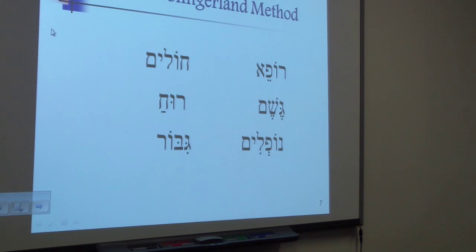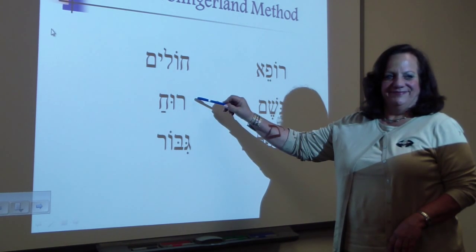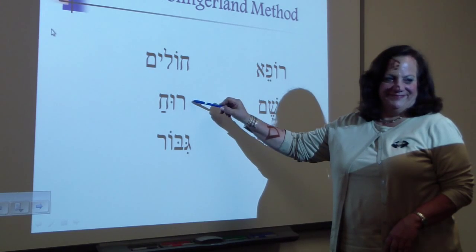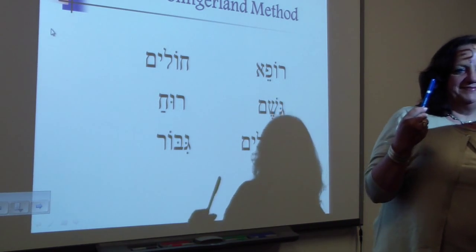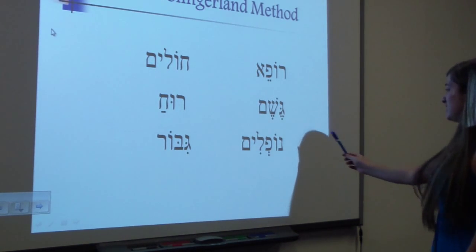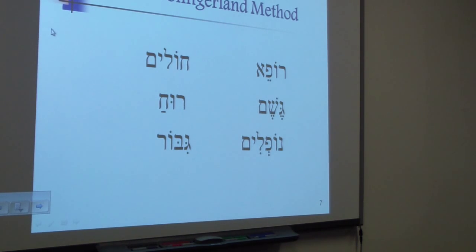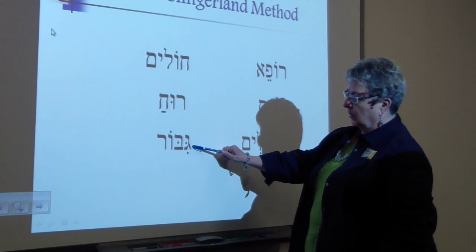Once everybody can do that, I hand the baton to a student and say, 'Find ruach.' The student goes up, finds the word, and says ruach. To find out if she's right, the class repeats it. Then you get to hand it to the next person. Your word is noflim — noflim. Your word is gibor — gibor.